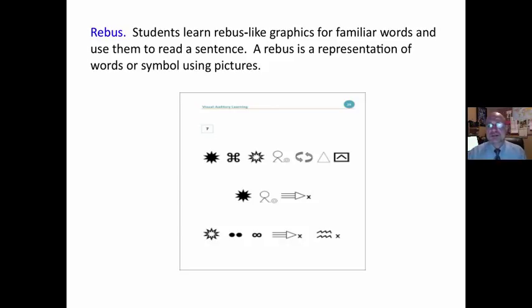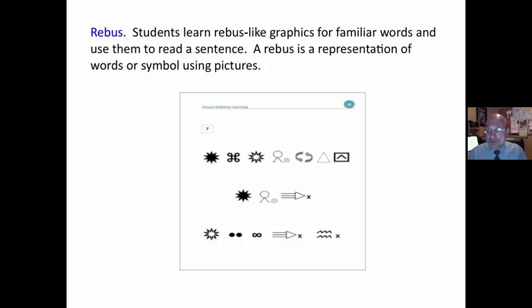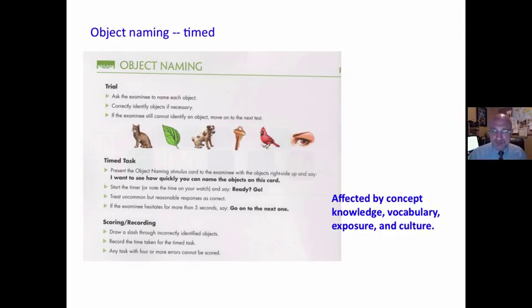It has a rebus — graphic-like forms for familiar words used to read a sentence. A rebus is a representation of words or symbols using pictures. That tells us something, but I don't know if that's a readiness skill. I'm not quite sure what this is.